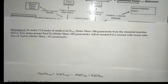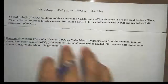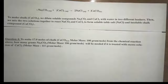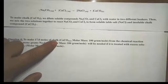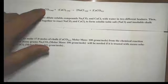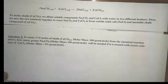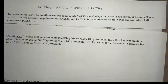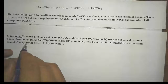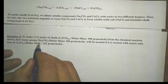Let's try another problem dealing with the chemical process of making chalk. We start with our balanced chemical reaction right there. For this question, to make 17.0 moles of chalk from the chemical reaction above, how many grams of sodium carbonate will be needed if it's treated with excess solution of calcium chloride? The same problem, but now I'm focused on sodium carbonate, not calcium chloride.